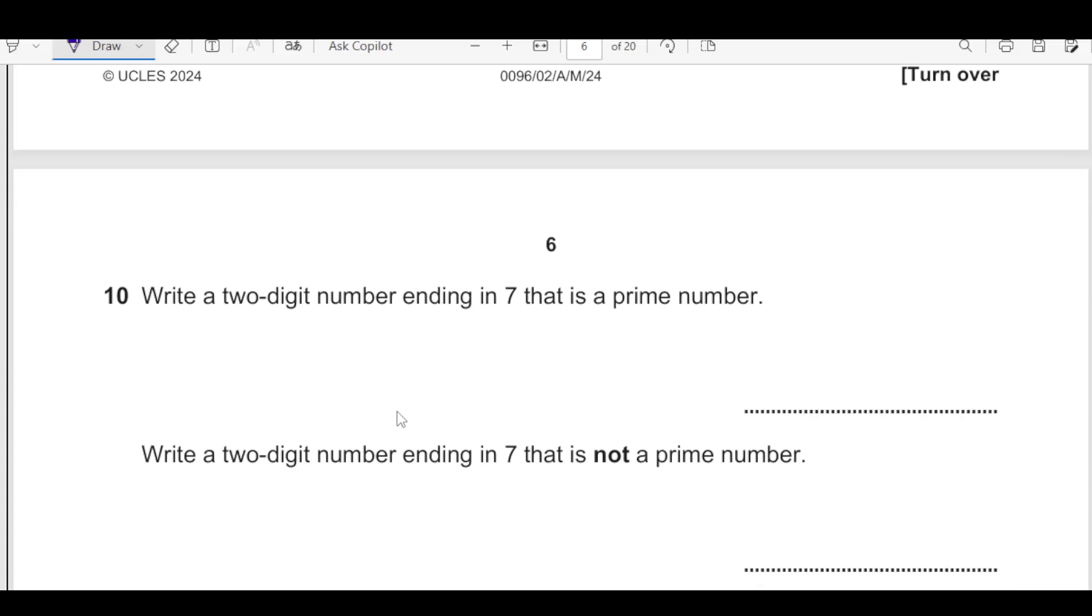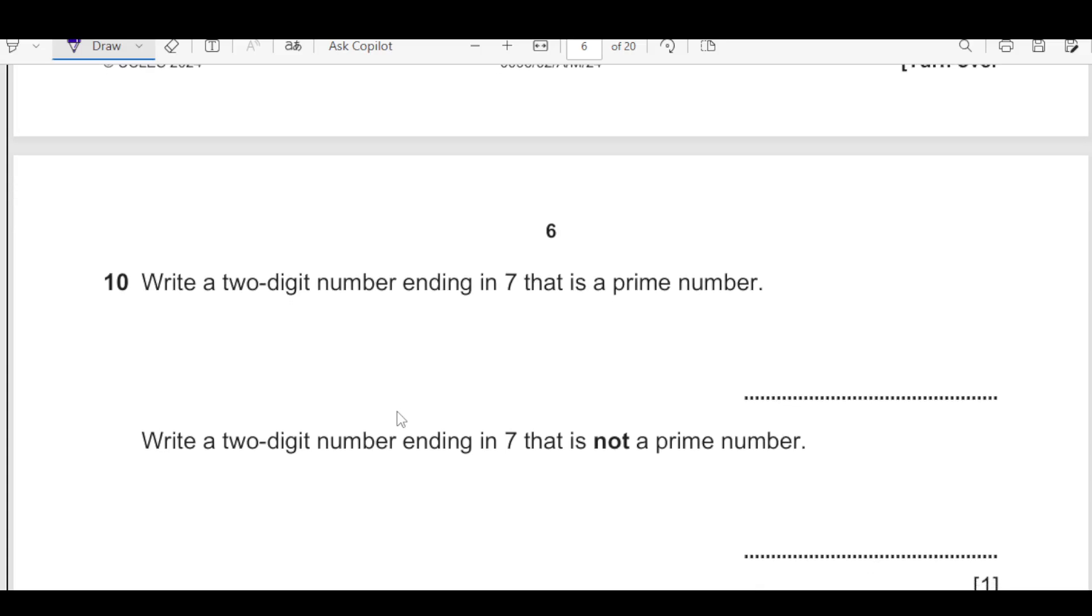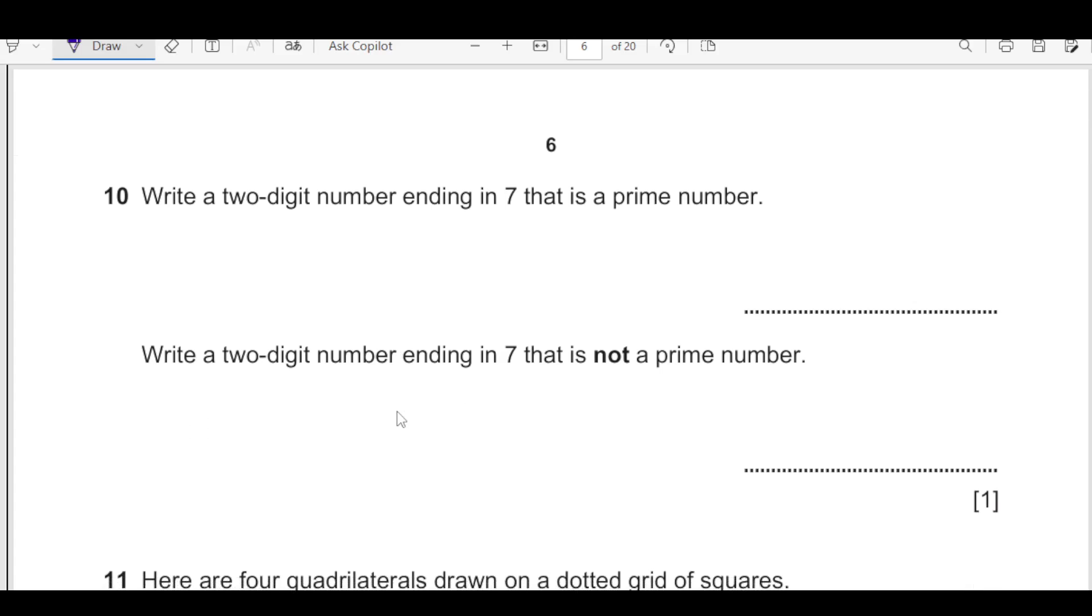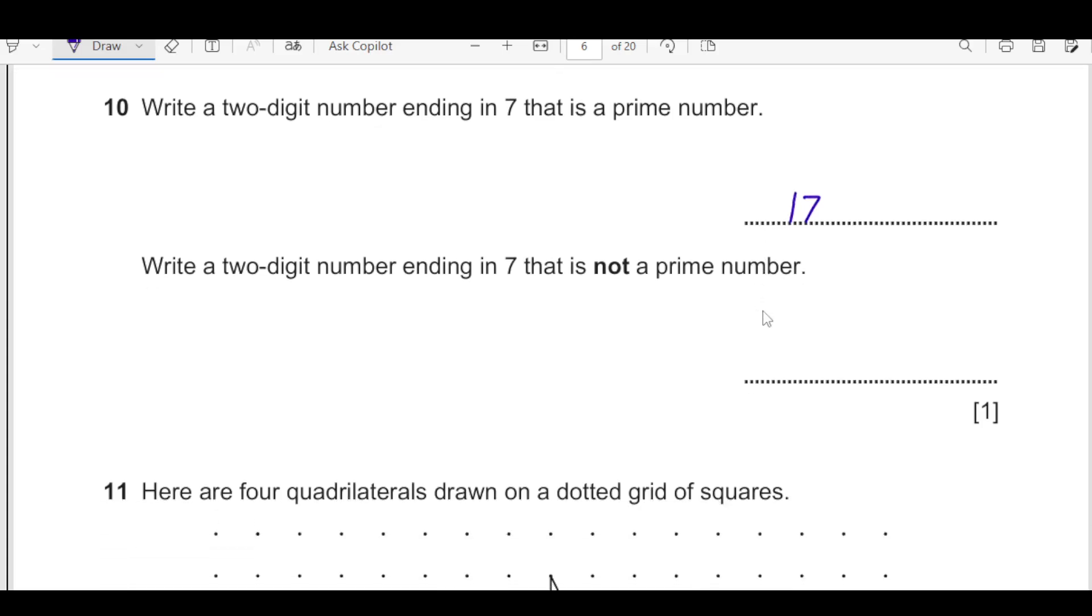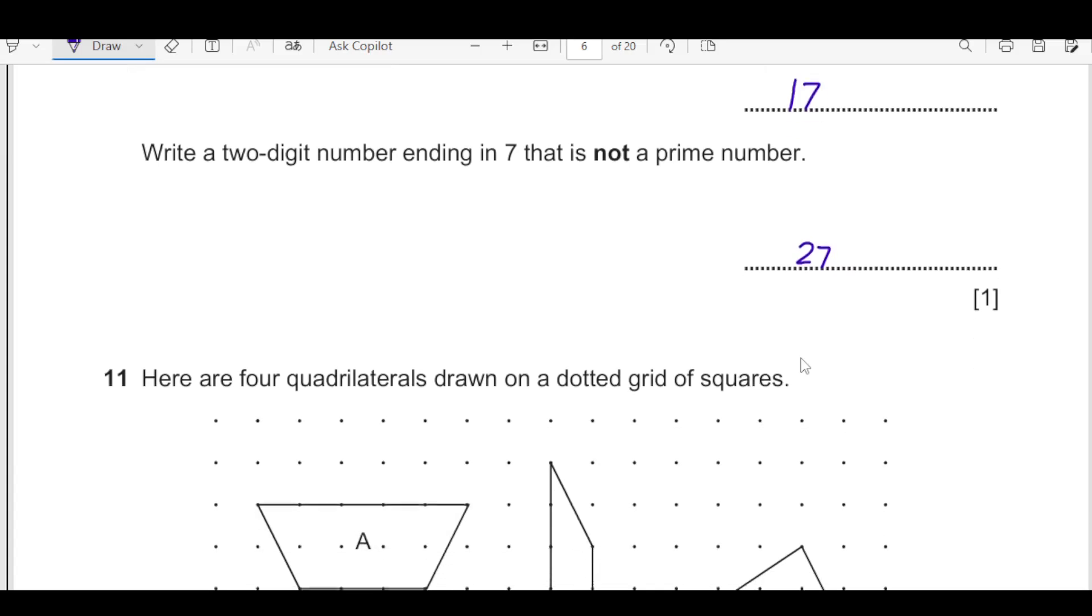Number 10. Write two digit number ending in 7. We are looking for a number that ends with 7, but it is a prime number also. We have 17 is the number that is prime and end with 7. Write two digit number that ending in 7 and is not prime. Two digit number is 27 because this is divisible by 3. So this is not a prime number.